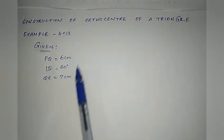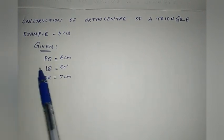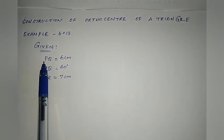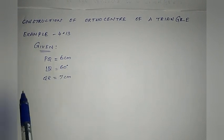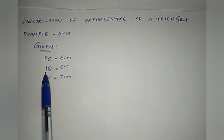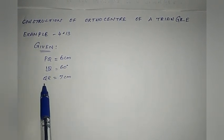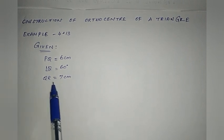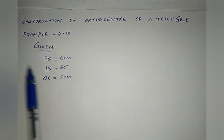So, the given measurements are: PQ, angle Q, and side QR. We have two sides and one angle. PQ and QR are the two given sides, angle Q equal to 60 degrees, and QR equal to 7cm. So two sides and one angle are given.